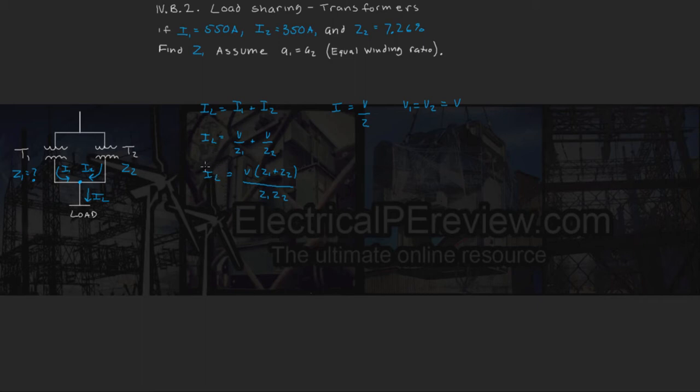It should be our load current equals V times Z1 plus Z2 over Z1 times Z2. Now the next thing is, since we don't know our load current, we need to find a way to set both of our impedances equal to each other using I1 and I2, since that's what we know. Now there's a couple different ways to do this, but by far the easiest way is as follows.